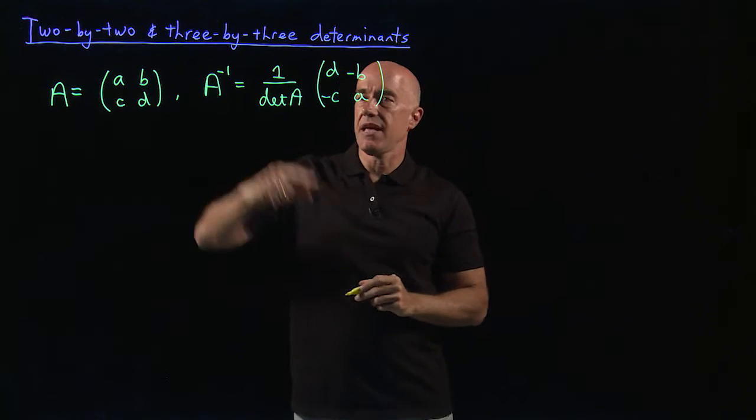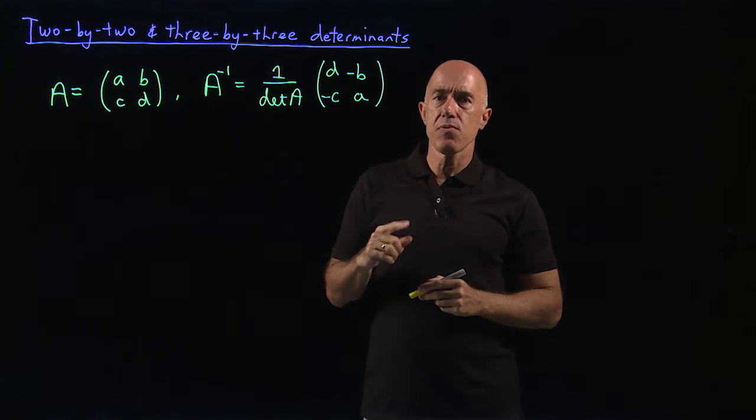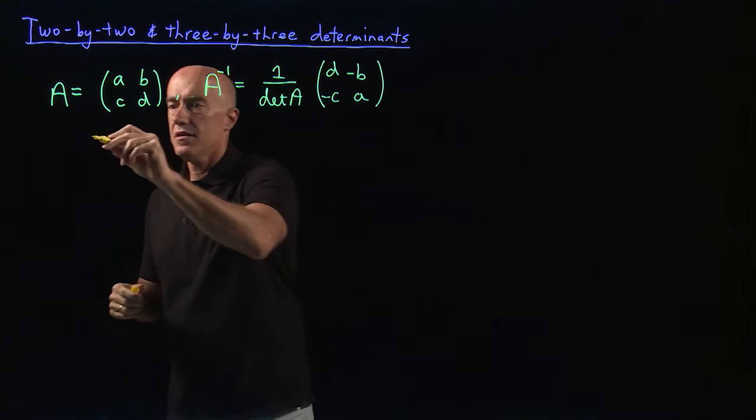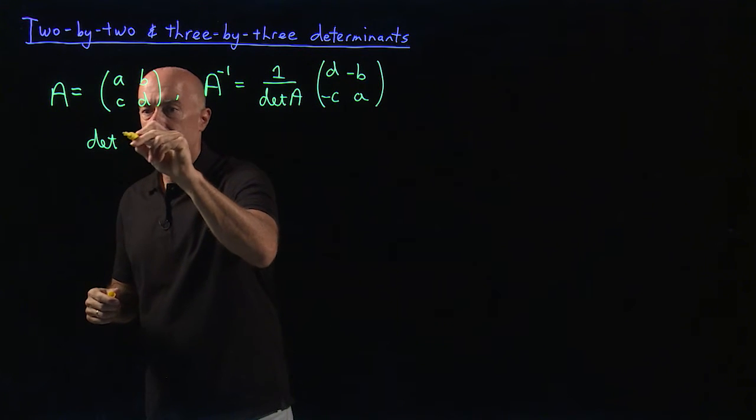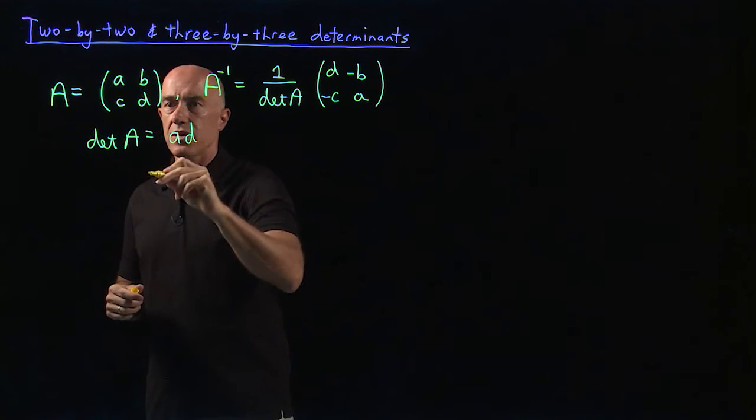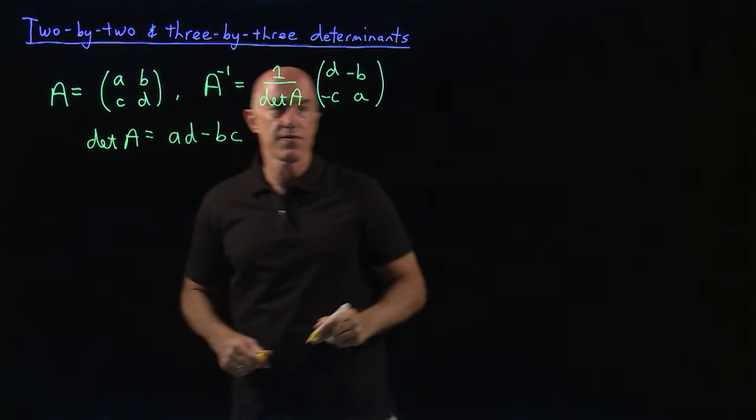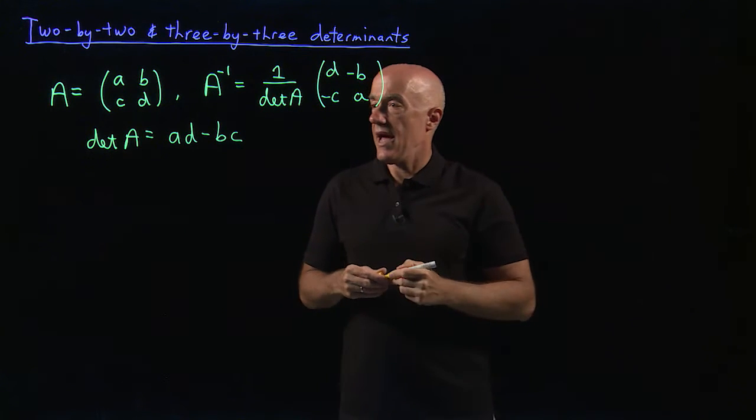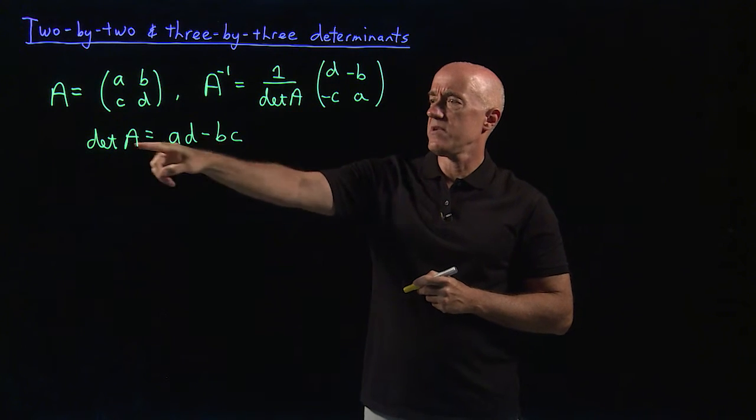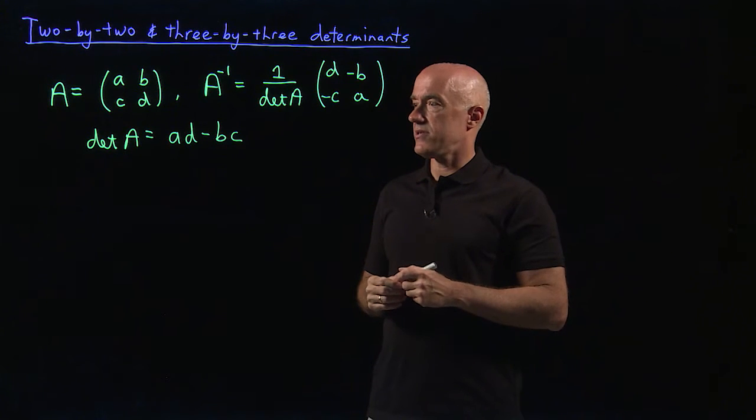So A times A inverse is equal to I. The important point here is that we divide through by the determinant of A. So the determinant of A turned out to be A times D, multiplying the diagonal elements, minus B times C, the off diagonal elements. And in order for the inverse to exist, the determinant of A needed to be non-zero.